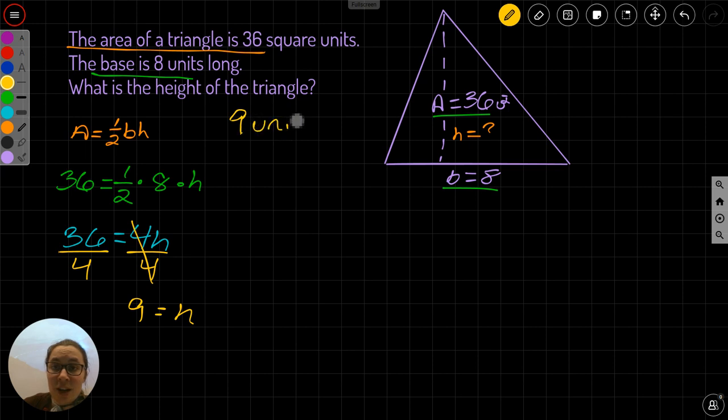And I can check that by running it here. So I've changed my formula again. A equals 1 half times 8 times 9. Alright, 1 half times 8, A equals 1 half times 8 is 4 times 9, and 4 times 9 equals 36.